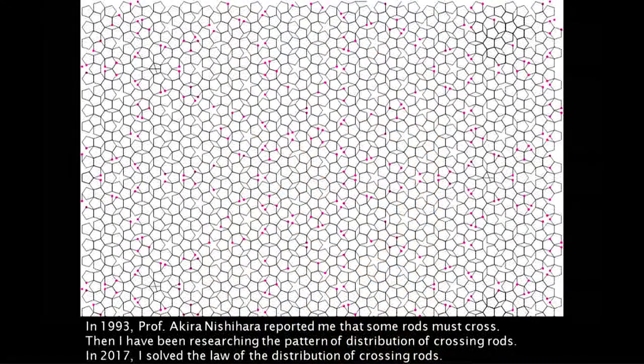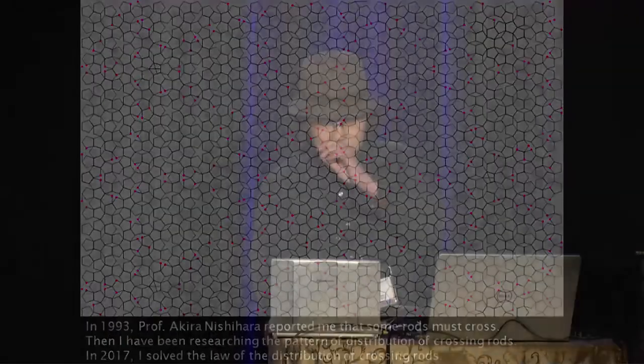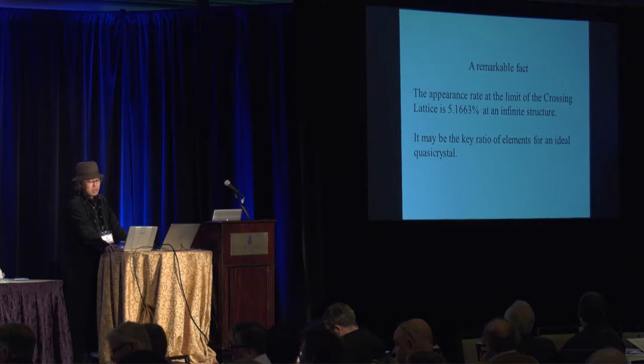In 1993, Professor Akira Nishihara reported to me that some rods must cross. Since then I have been researching the pattern of the distribution of crossing rods. In 2017, last year, I solved the law of the distribution of the crossing rod. A remarkable fact: the appearance rate at the limit of the crossing lattice is 5.1663 percent. At an infinite structure, it may be the key ratio of elements for an ideal quasicrystal.